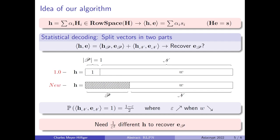Now, we can give an idea of our algorithm. The first thing is that if we take h, a vector belonging to the row space of the matrix H, we can notice that we can compute h dot product e in polynomial time, because we know that the matrix H times e is equal to s.